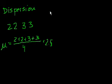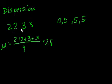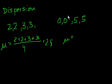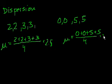Now what if we had the numbers 0, 0, 5, and 5? What's the mean here? Well, this is the entire population. It will be 0 plus 0 plus 5 plus 5, that's 10 divided by 4, which is equal to 2.5.